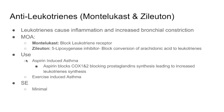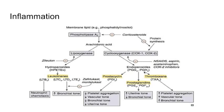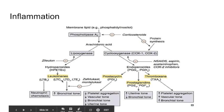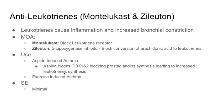Antileukotrienes are used specifically for refractory asthma, aspirin-induced asthma, and exercise-induced asthma. In aspirin-induced asthma, aspirin blocks COX-1 and COX-2, blocking prostaglandin synthesis, which leaves a lot of arachidonic acid that gets shunted into the leukotriene pathway, producing excess leukotrienes. That's why anti-leukotrienes can prevent aspirin-induced asthma. Side effects are minimal.